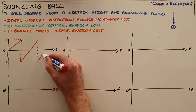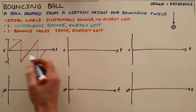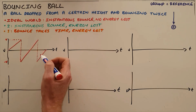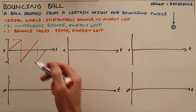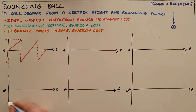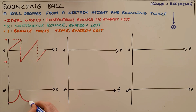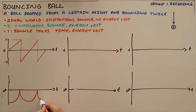On the displacement-time graph, with the ground as the reference point, the ball starts at a negative displacement above the ground, falls to the ground, bounces back to the same negative displacement — because no energy is lost — returns to the ground, bounces again to the same original height, and is then caught. The maximum displacement remains constant with each bounce.